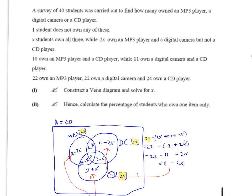It says 10 people own an MP3 player and a CD player, so that must mean the 10 belongs to the intersection of MP3 and CD, so 10 belongs to all of this. But as we've already got x in here, that means that this part here would be 10 minus x.